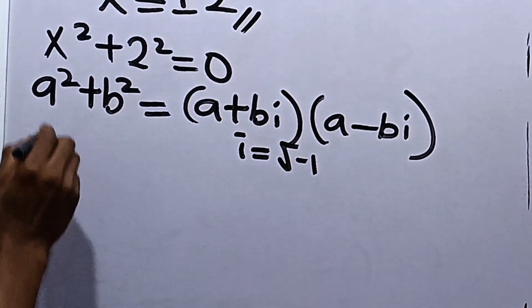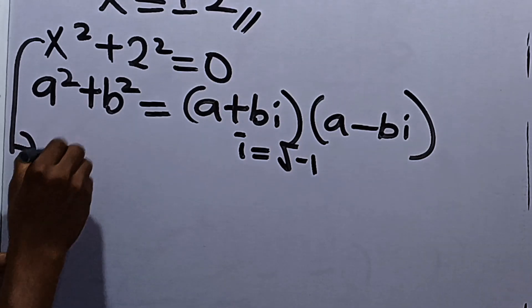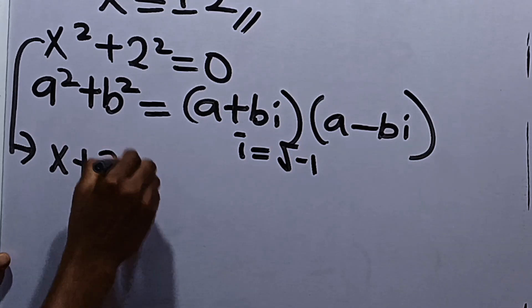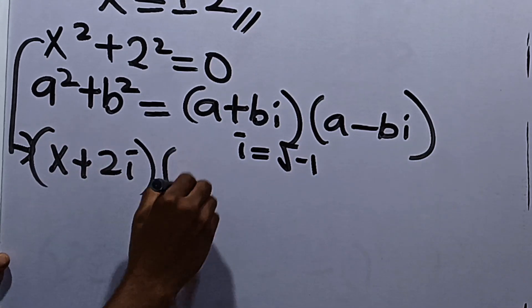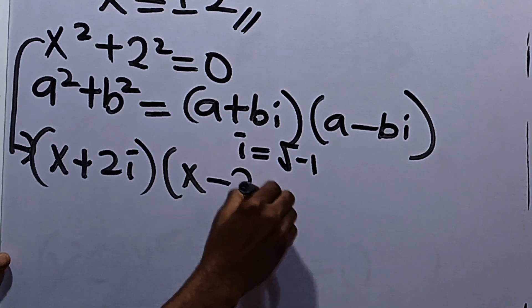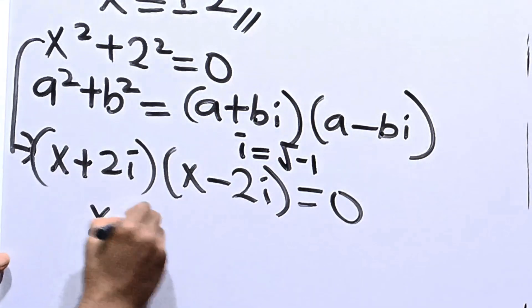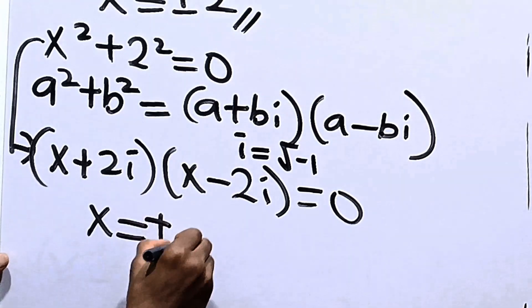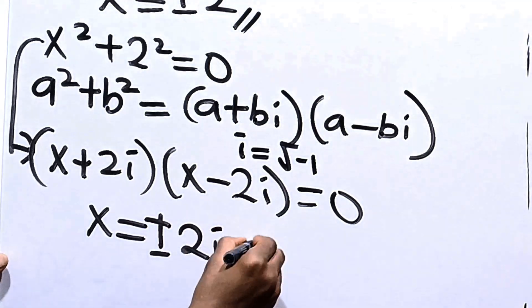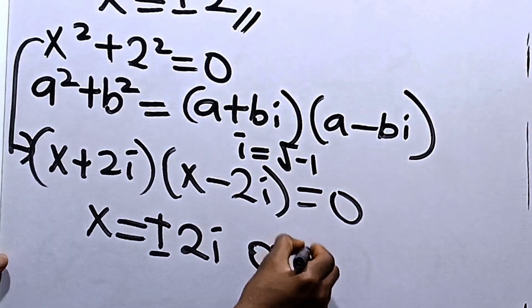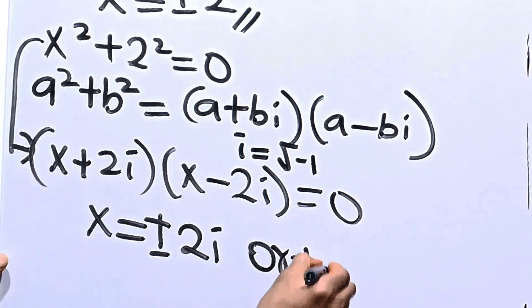For here, we now have that this will be factored. So, you have x plus 2i multiplied by x minus 2i to be equal to 0. Now, that x is equal to plus or minus 2i, or plus or minus 2 from the other answer we got.